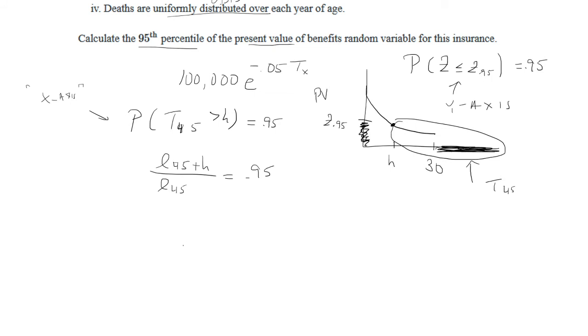So that's where we use the standard ultimate life table. And I'm going to multiply both sides by l 45. And if we look that up in the table, it's 99,033.9. So multiply that out, it's 94,082.205. Okay, so that doesn't give us what h is yet.